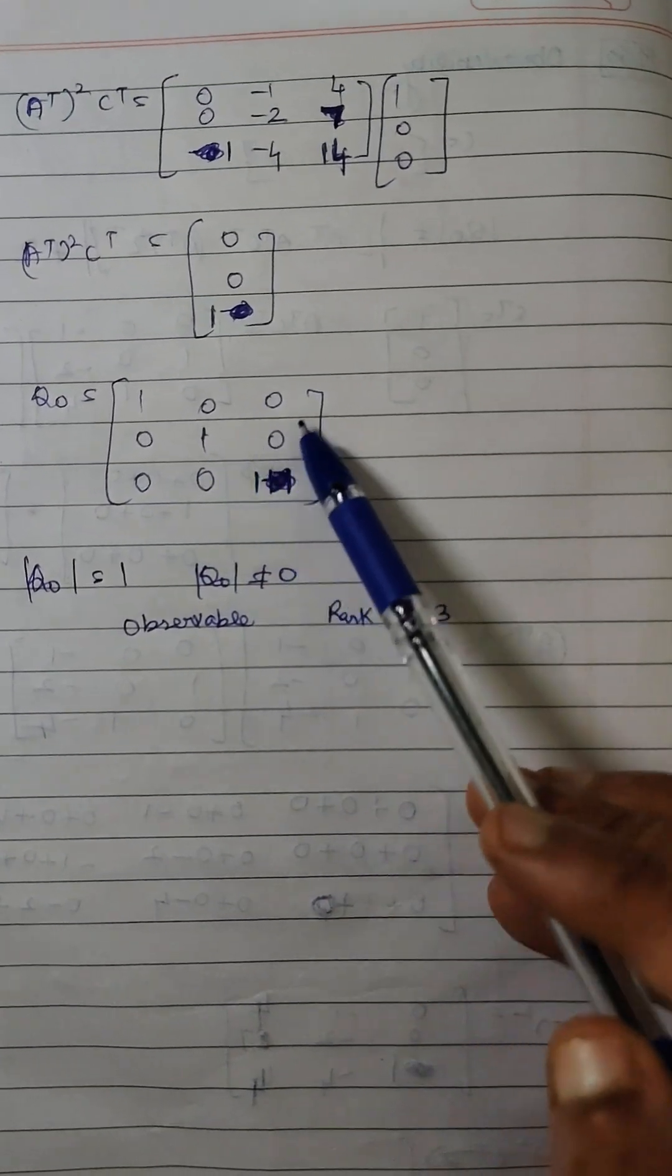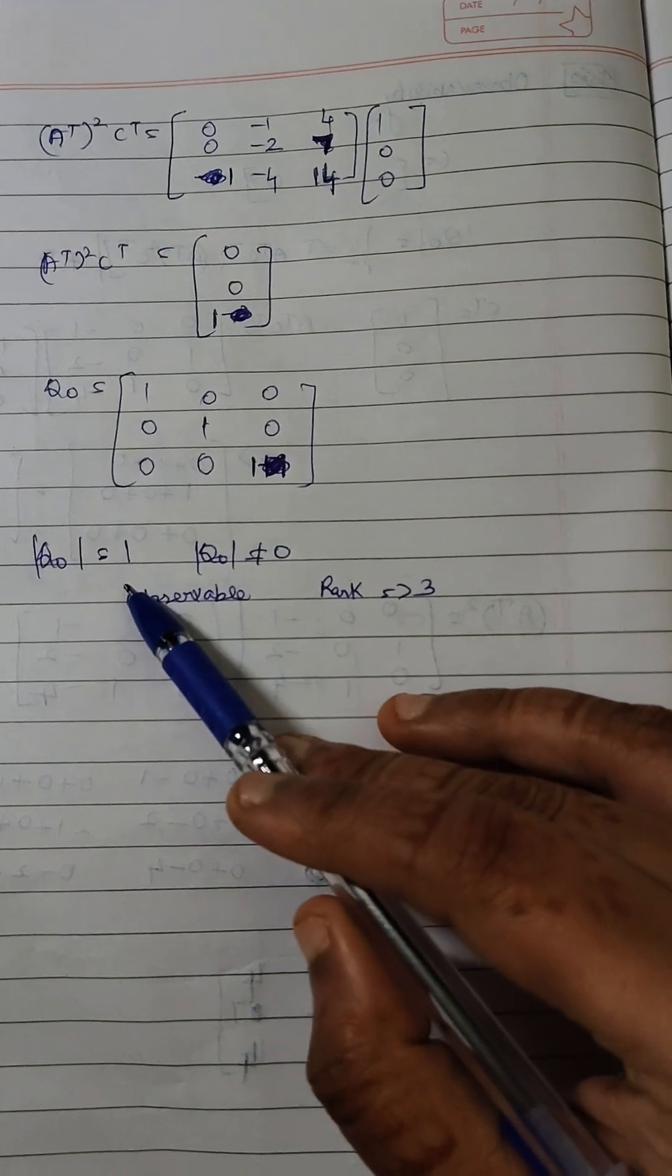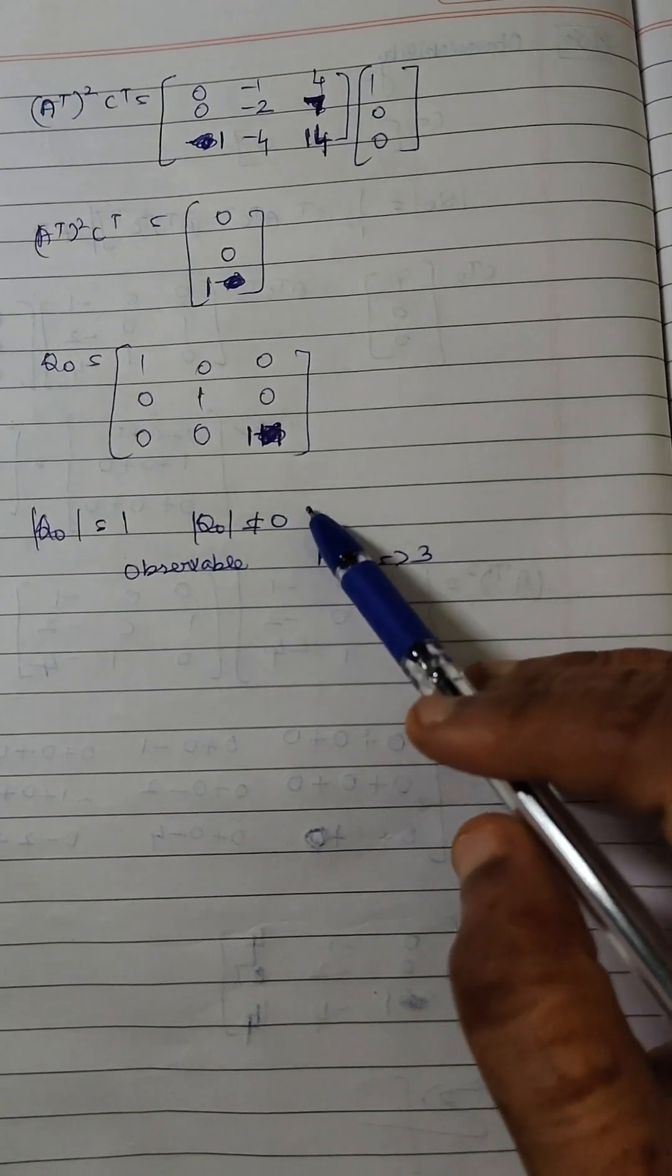So q naught is 1 0 0, 0 1 0, and while we are taking the modulus of q naught we are getting the value of 1. So q naught modulus of q naught is not equal to 0.